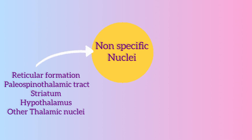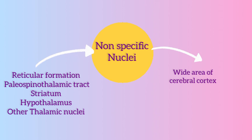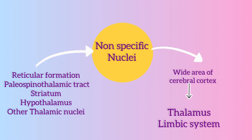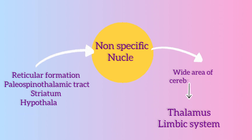Non-specific nuclei include the intralaminar, midline, centromedian, and reticular nuclei. These receive inputs from the reticular formation, paleospinothalamic tract, striatum, hypothalamus, and other thalamic nuclei, and project diffusely to wide areas of the cerebral cortex, thalamus, and limbic system.